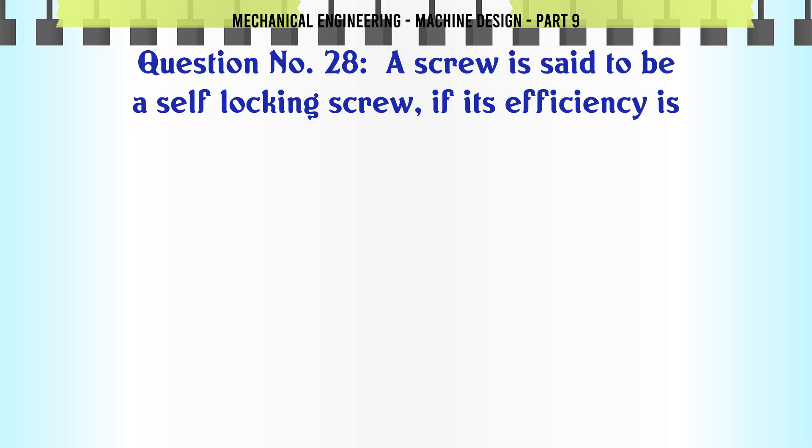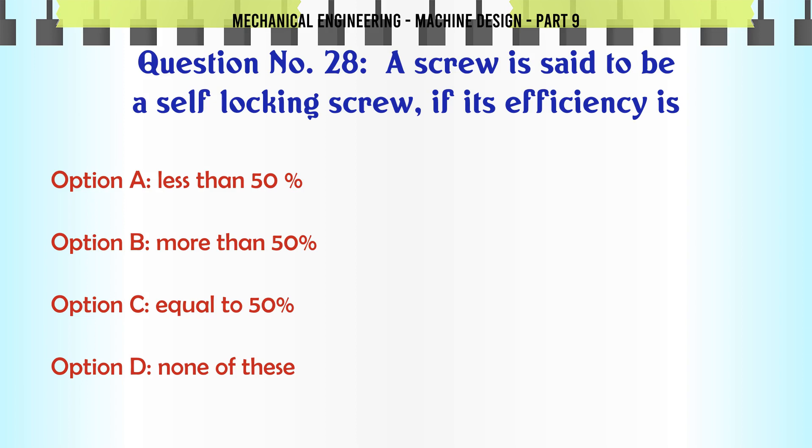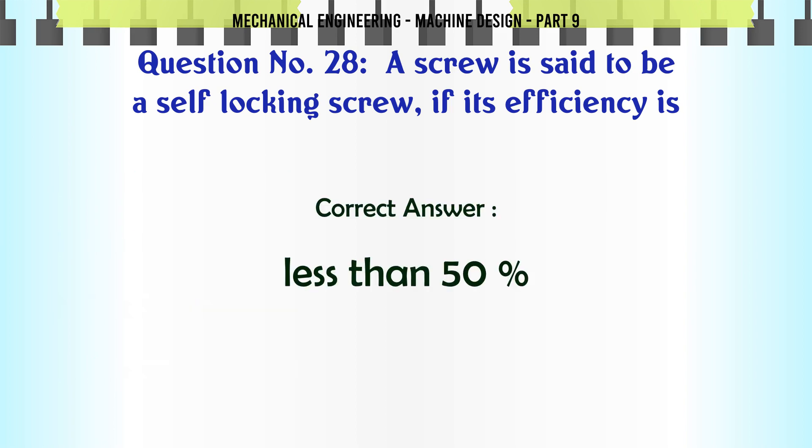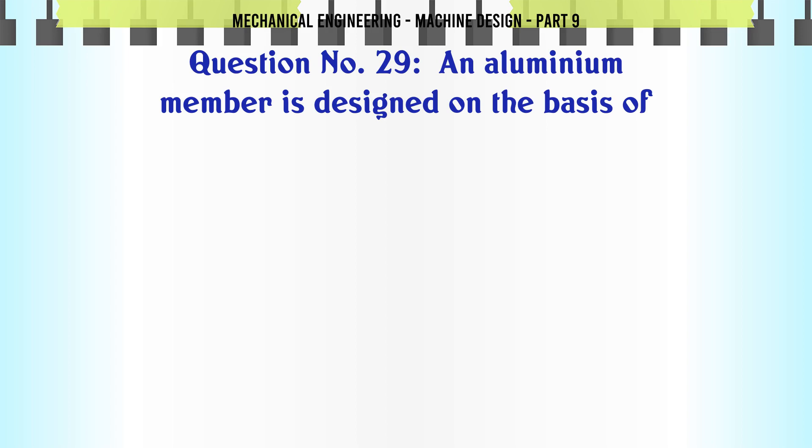A screw is said to be a self-locking screw if its efficiency is: A. Less than 50%, B. More than 50%, C. Equal to 50%, D. None of these. The correct answer is Less than 50%.